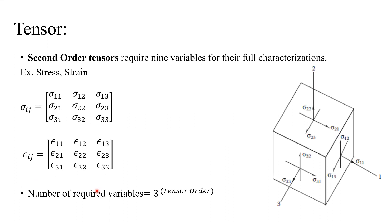Second order tensors require nine variables or nine values for their full characterization. An example of second order tensors is stress and strain for mechanical engineering students. By now we should be able to come up with a rule: the required number of values for each tensor order is three to the power of the tensor order. If the tensor order is zero, that's 3⁰ = 1. If it is one, 3¹ = 3. For second order tensors, we need nine values. We show the stress tensor as a 3×3 matrix with nine components, and same for strain.